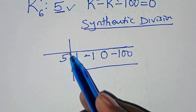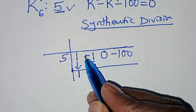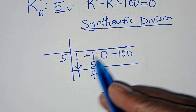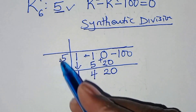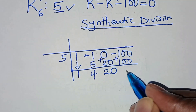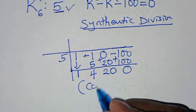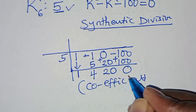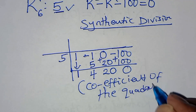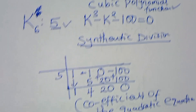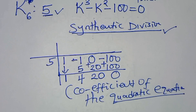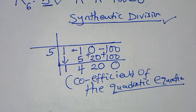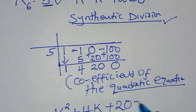Dropping the leading 1, we compute: 5 times 1 is 5, and negative 1 plus 5 gives 4. Then 5 times 4 is 20, and 0 plus 20 is 20. Then 5 times 20 is 100, and negative 100 plus 100 equals 0. The coefficients of the resulting quadratic equation are 1, 4, and 20.